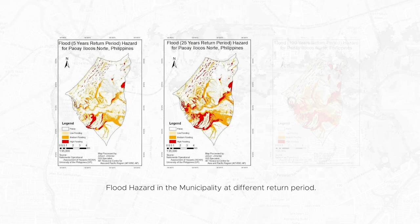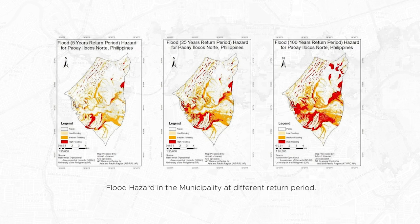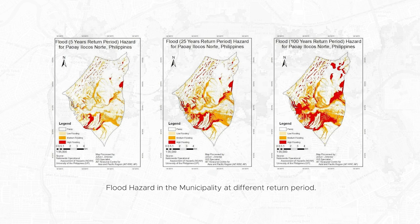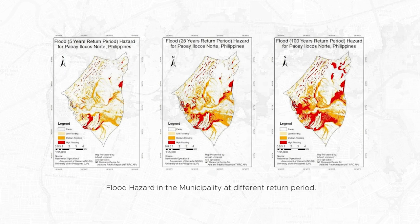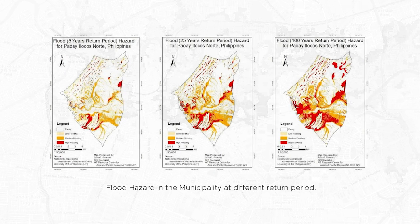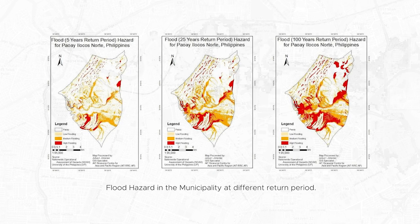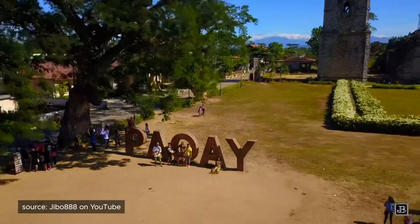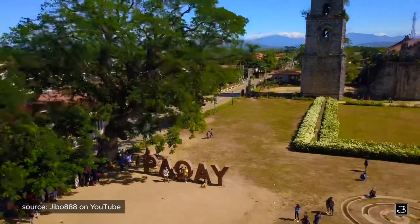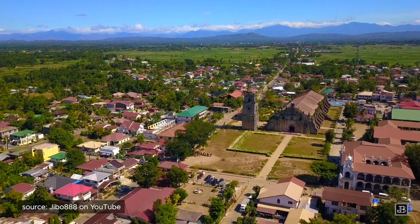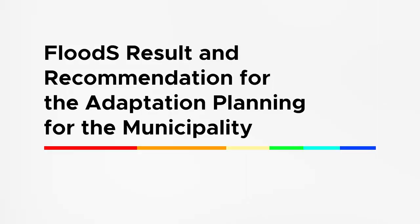UP NOAA also provides a map showing that the area has been greatly affected by floods, highly vulnerable especially to floods with a return period of 100 years. This shows that the municipality, with the impact of climate change, may see enhanced occurrence of extreme floods — those with a return period of 100 years. Thus, more areas will be affected, which may lead to highly damaging losses to the municipality's economy and, worse, loss of lives.